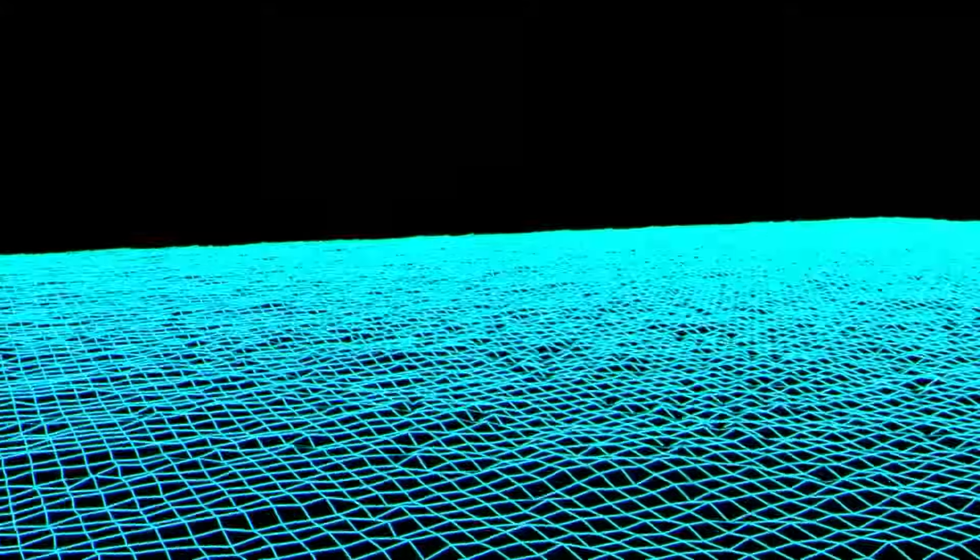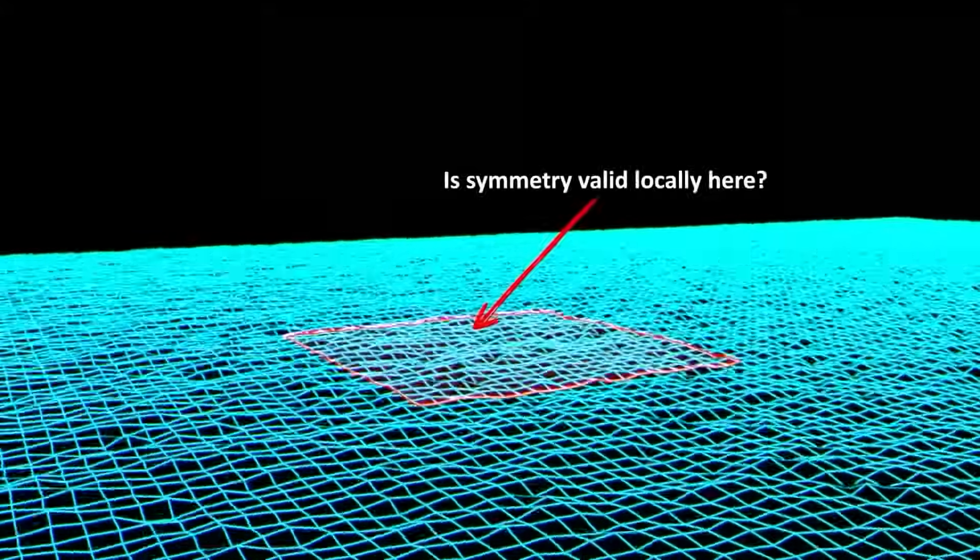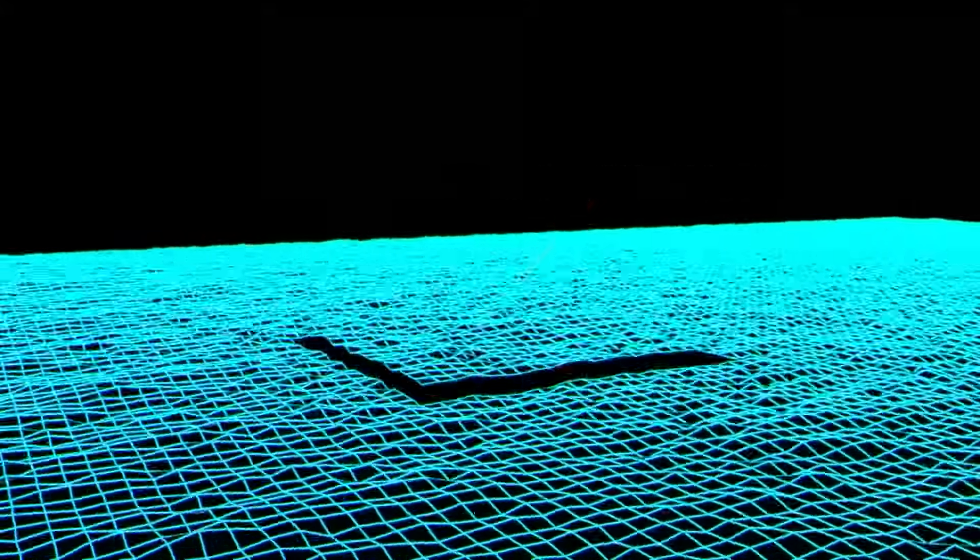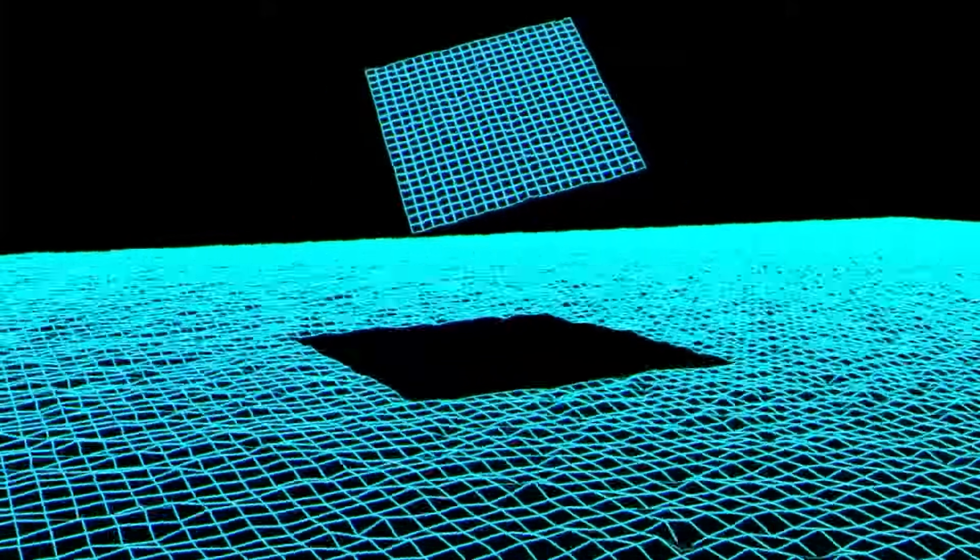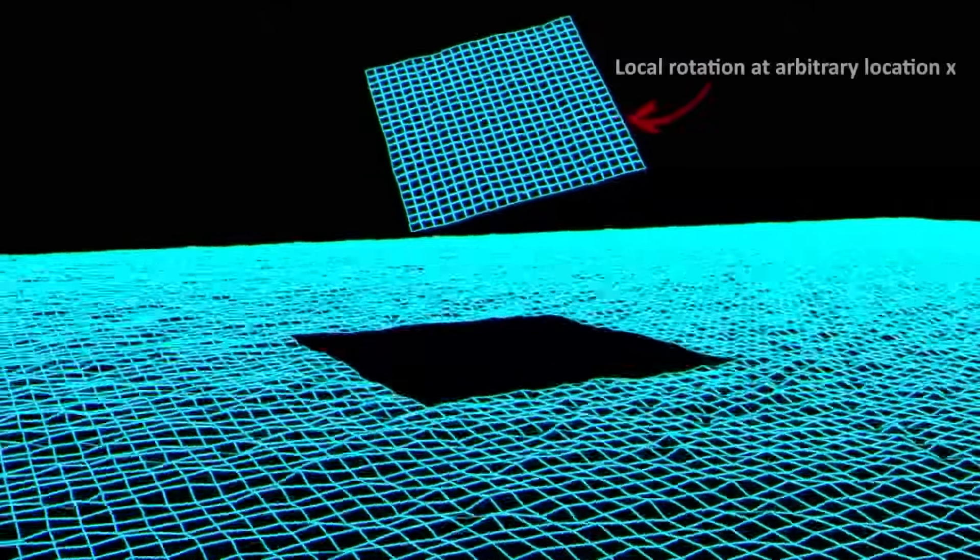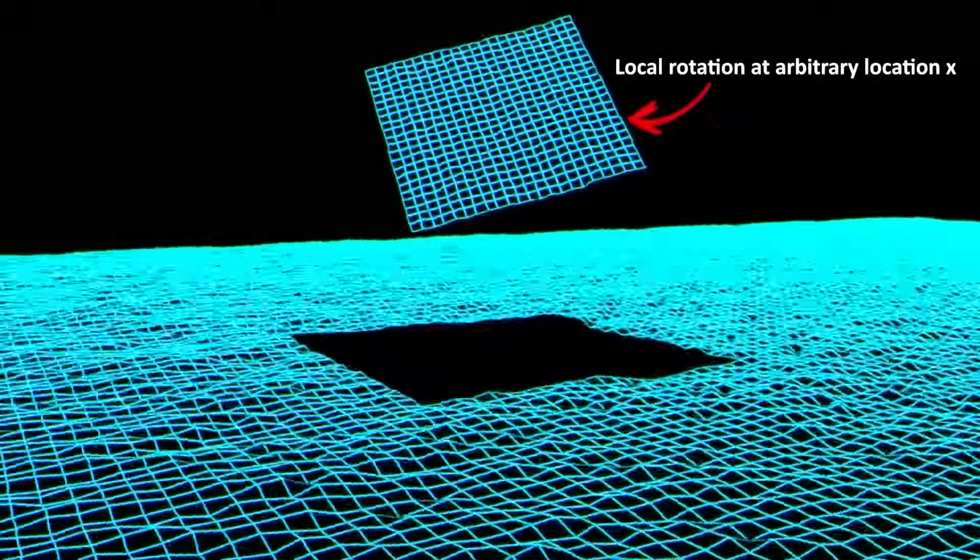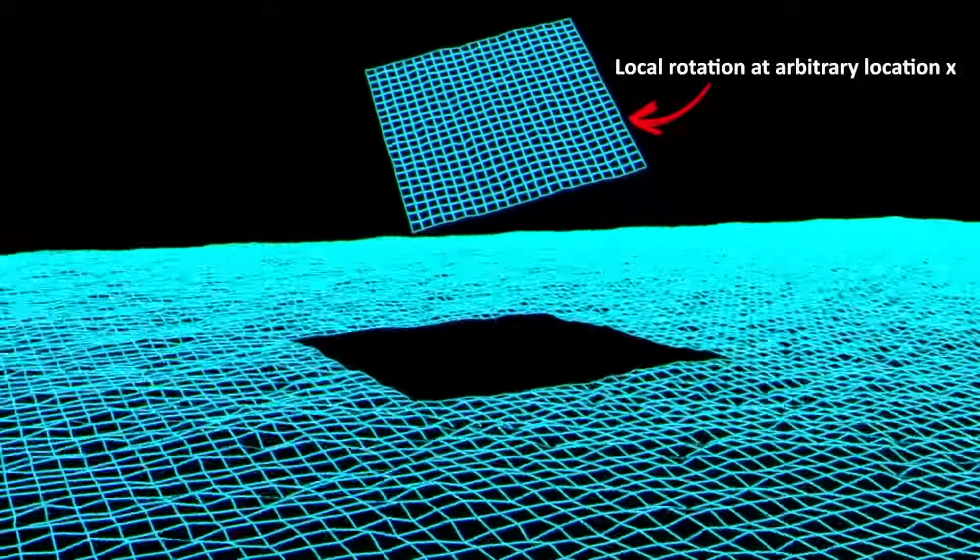But what if we demand that this symmetry be valid locally at some arbitrary space-time coordinate x? In other words, we are asking whether this equation changes if we rotate the field at some confined location, rather than globally. In this case, the transformation depends on the space-time coordinate x, which looks like this. So in this case, the psi transforms to psi e to the i theta x, and the psi bar transforms to the psi bar e to the negative i theta x. So the theta now becomes theta x due to our local symmetry demand.